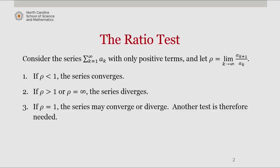Consider the infinite series from k equals 1 to infinity of a sub k with only positive terms, and let rho equal the limit as k approaches infinity of a sub k plus 1 over a sub k. If rho is less than 1, then the series converges.